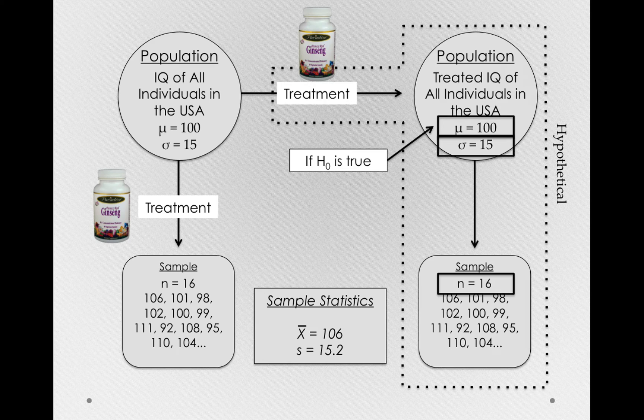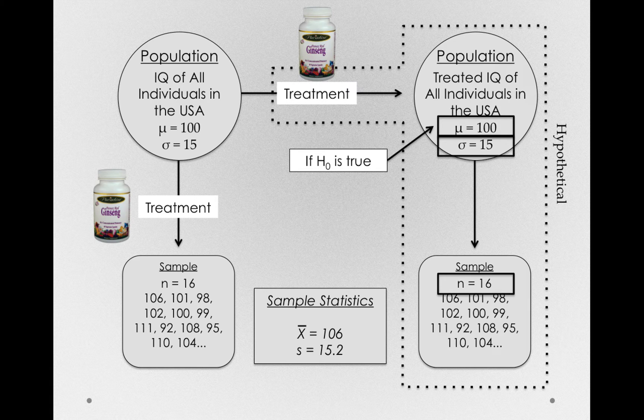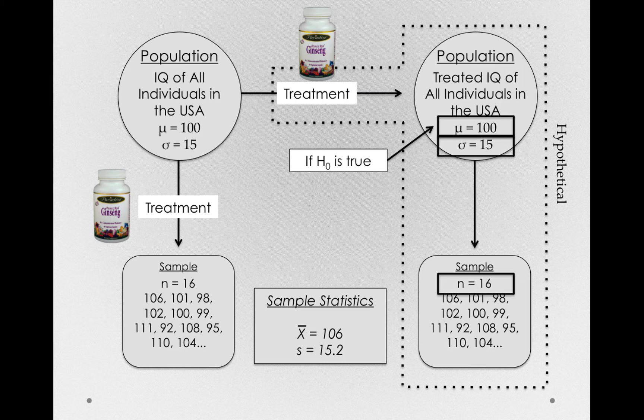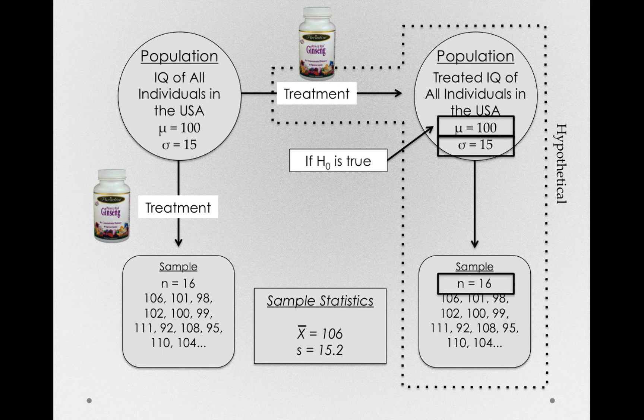And to figure out these characteristics, we only need to know the population mean we're trying to estimate. In this case, it would be 100, if the null hypothesis is true, has a standard deviation of 15, assuming we didn't change the standard deviation with our treatment, an assumption we'll come back to, and we needed to know our sample size, samples of size 16.